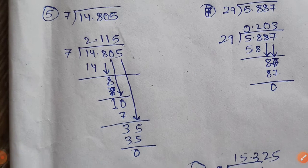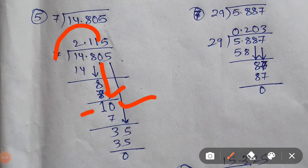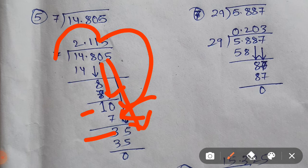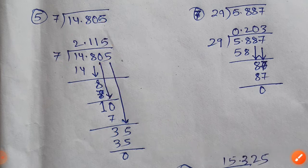8 minus 7 will give you 1, and this 0 will come down, making it 10. Again 7 times 1 is 7, so 10 minus 7 will give you 3. And this 5 comes down, making 35. We know that 7 times 5 is 35. So 35 minus 35 will give you 0. So your final answer will be 2.115.